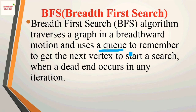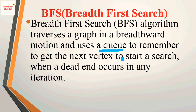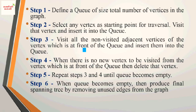BFS uses a queue data structure to remember the next vertex to start a search. BFS always uses a queue. That is, BFS is implemented using a queue data structure. When a dead end occurs in any iteration, the queue is used to get the next vertex for the search.